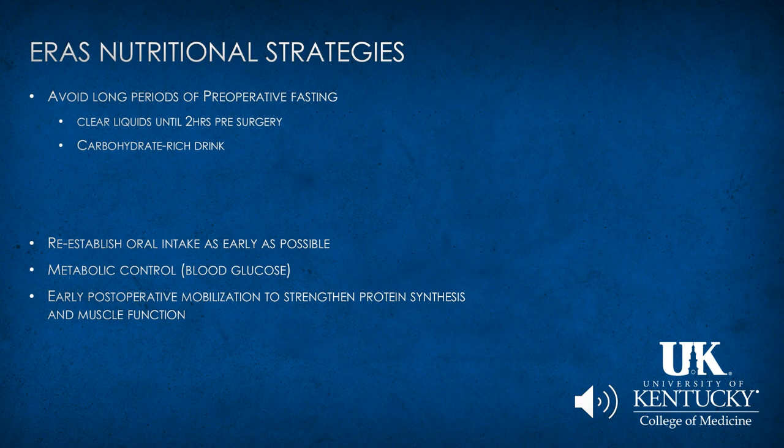It is also essential to preoperative optimization that postoperatively, oral intake is established and tolerated as early as possible. Metabolic control starts with preoperative optimization guided by hemoglobin A1c, and you want to maintain a reasonable blood glucose concentration throughout — though this may be difficult due to the surgical stress response. Early postoperative mobilization is also part of the nutritional strategy, to strengthen protein synthesis and muscle function. You don't want to create a catabolic state by failing to provide a reasonable amount of nutrition — meaning appropriate carbohydrates, protein, and fat for the patient's needs. Nutritional guidance from a dietitian is encouraged.